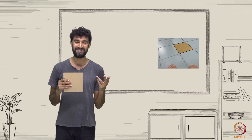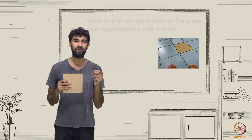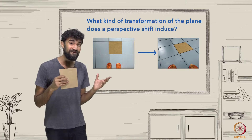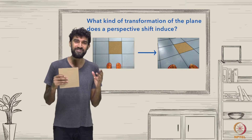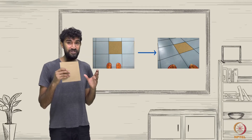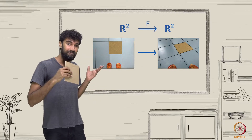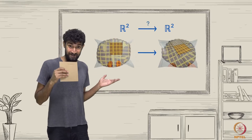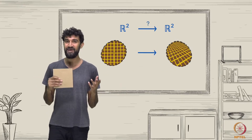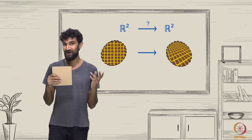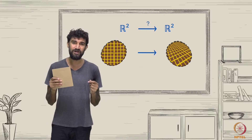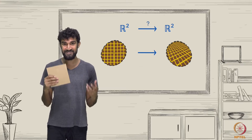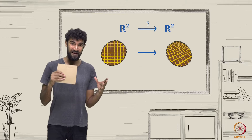Here's another way of asking the same question: what kind of transformation of the plane does a perspective shift induce? In other words, if we think of a perspective shift as a function from the plane to the plane, then what exactly is that function? Is it similar to any other transformations you may have encountered? Answering this question will help us precisely formulate what changes and what stays the same when we shift perspective.